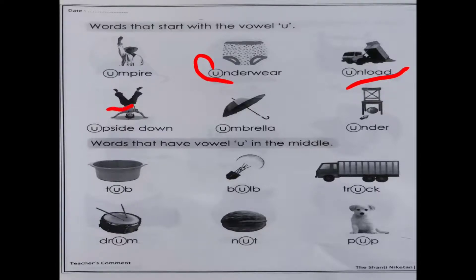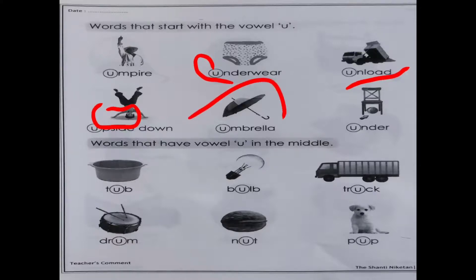Upside matlab, jab uppar ka portion neeche aajata hai, toh uppar ke portion ko bolte hai upside, aur neeche ke portion ko bolte hai down. Toh kya bolenge - upside down. Yaani uppar wala portion neeche hai. Next is - umbrella. And jab bhi koi cheez kisi cheez ki neeche rakhi hoti hai, toh usse bolte hai - under.